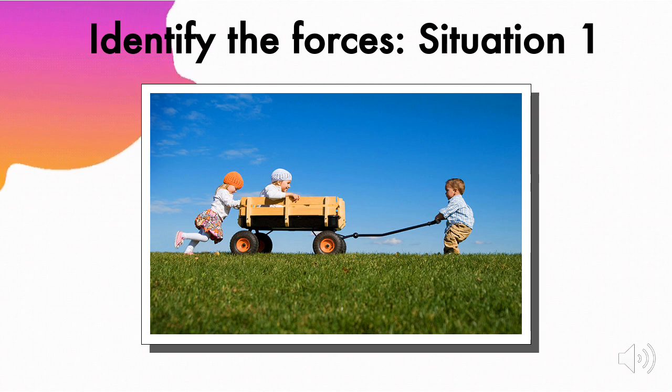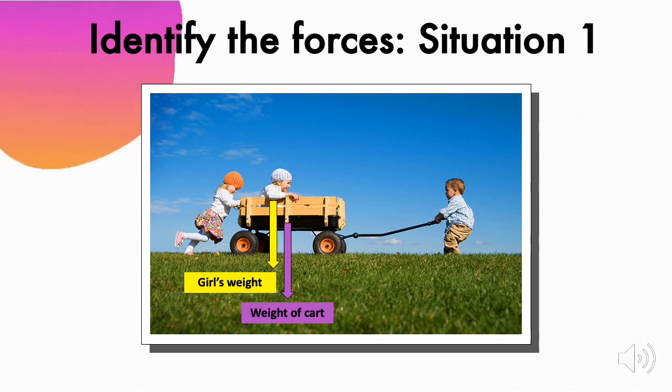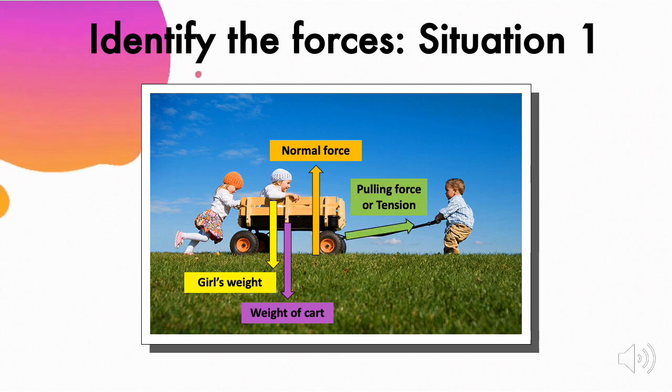So, how many forces are there acting on the wheel cart? I managed to identify six of them. Let's look at them one by one. First is the weight of the cart itself. Second is the weight of the girl sitting on it. The third force is normal force exerted on the cart by the ground below. Fourth is the pulling force or tension as the boy is trying to pull the cart forward. The fifth force is pushing force exerted by the girl in the orange hat. Last is friction on the cart's wheels, and it is acting backwards as the cart moves forward.